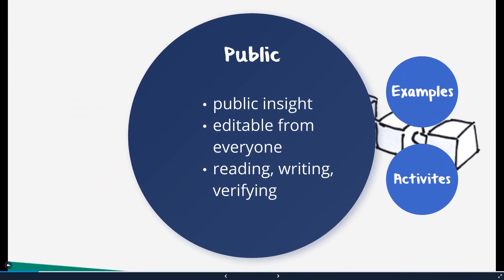The public blockchain is, as the name suggests, public. This means that everyone is free to join the network and nobody is really responsible here. Everybody can participate in reading, writing, and verifying the blockchain. Another characteristic is that they are open and transparent, allowing any person within the network to verify a certain point in time in the public blockchain record. No particular person or group is responsible for controlling it, and decision making and verification of transactions is achieved through consensus mechanisms such as proof of work or proof of stake.